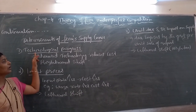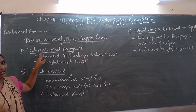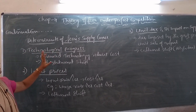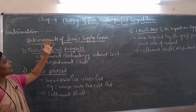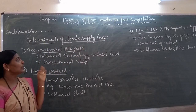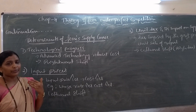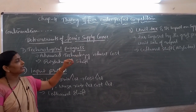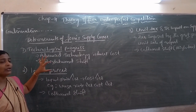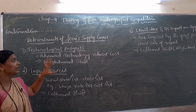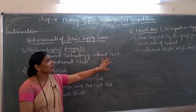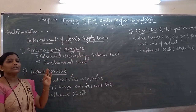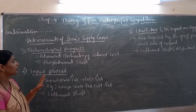The first determinant is technological progress. How does technological progress influence the supply curve? If there is advanced or improved technology, then the cost of production decreases. If a firm uses improved technology in production, then cost can be decreased. So if cost decreases, the firm is able to produce more level of output.